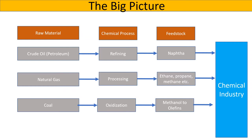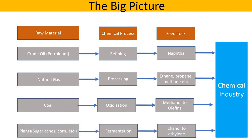The fourth material is plants. Sugar canes, for example, are fermented to produce ethanol and then ethylene.